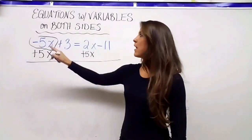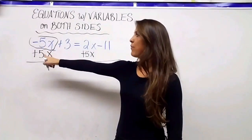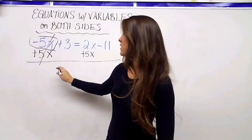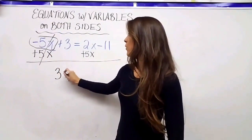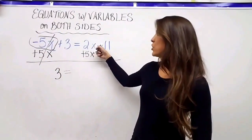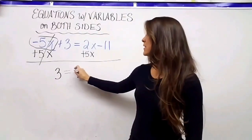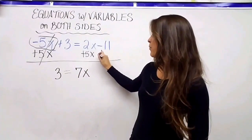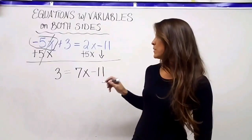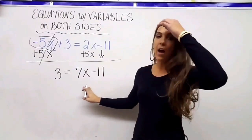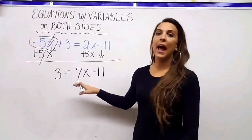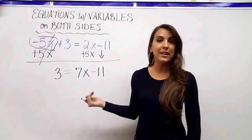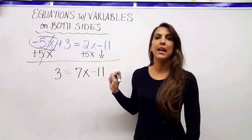So plus 5x on this side and plus 5x on this side: negative 5x plus 5x is zero, plus 3 leaves us with 3. On the right side, 2x plus 5x is 7x, and I bring down the minus 11 that I haven't used yet. Now that x is on one side I can isolate it.